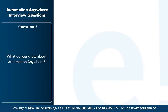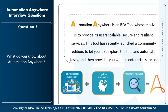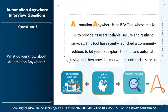Next question: what do you know about Automation Anywhere? Automation Anywhere is an RPA tool whose aim is to provide scalable, secure, and resilient services. It has a community edition and an enterprise version for enterprise-level automation. It offers better performance through integration with different platforms and can scale simultaneously. To summarize: Automation Anywhere = Robotic Process Automation + Cognitive Automation + Workforce Analytics.